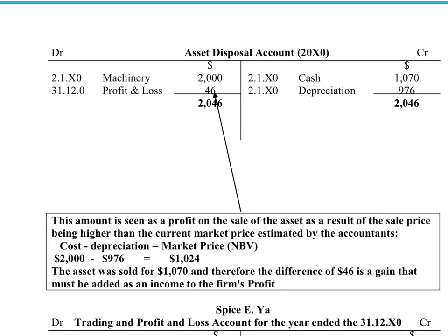To summarize so far: in the machine asset disposal account, we transferred the historic cost of the machine by crediting the machinery account and debiting the asset disposal account. We also transferred the depreciation of $976 — debiting the depreciation account and crediting the asset disposal account.